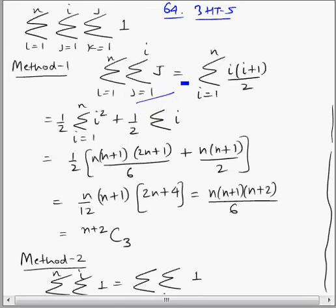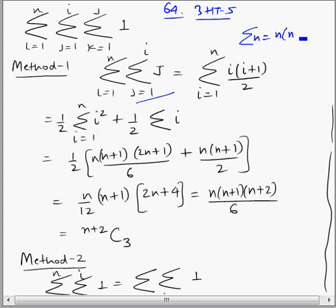Now we need to take sigma of j, where j varies from 1 to i. We apply the sigma n formula: sigma n equals n(n+1)/2. Applying this formula gives us the next expression.